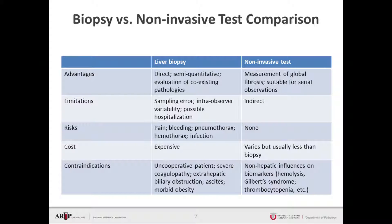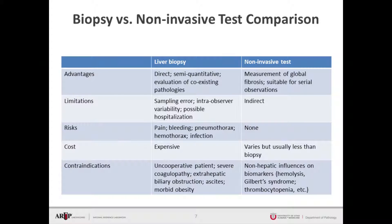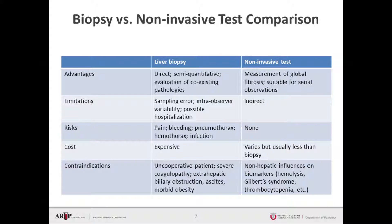The advantage of non-invasive tests is that they can provide a measurement of global fibrosis and are suitable for serial observations — unlike liver biopsy, which carries risks associated with repeated use. Non-invasive tests are more suitable for repeated observation due to limited risk. The limitation is that this is an indirect method of assessing fibrosis. The risk is essentially none, as it involves either imaging or a blood draw. Generally they are less expensive, though there are some contraindications — for example, erroneous results can be observed in those with Gilbert syndrome or thrombocytopenia.